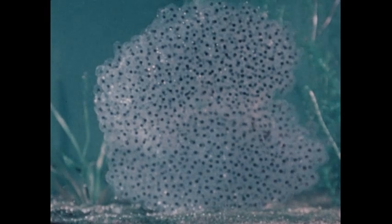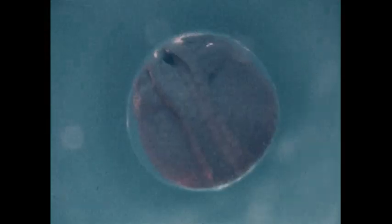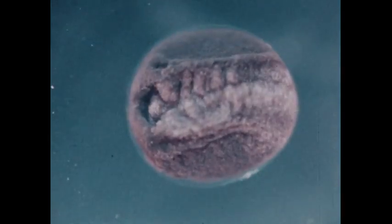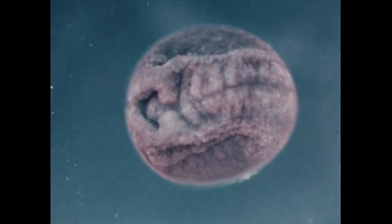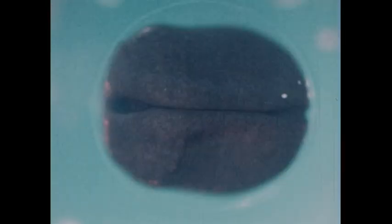The pond waters are still cold, but the energetic eggs and the sun's heat raise the jelly's temperature, and in this warmer environment, the cells begin to take different forms. A slit appears which will soon fold into a tube. This will become the animal's spinal cord.